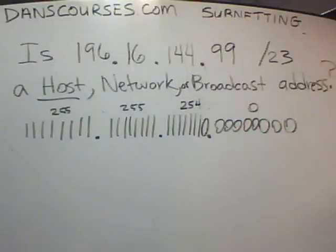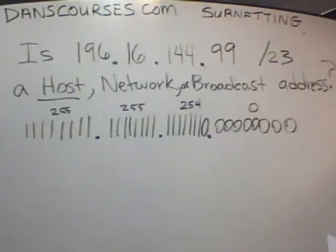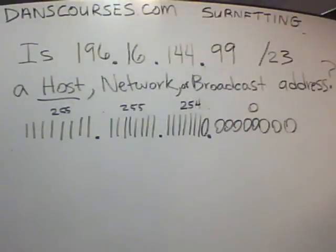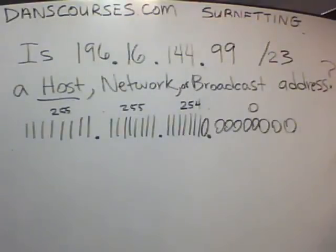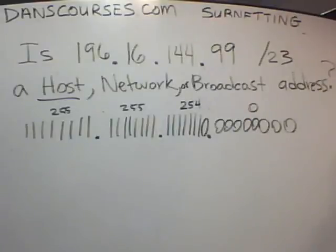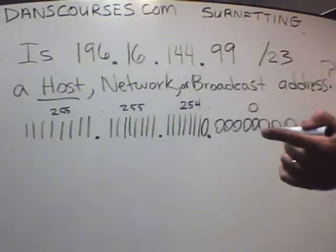So how do we find out whether this is a host, a network, or a broadcast address? The magic number will tell us all the information we need to know. What is the magic number? Andrew, what is the magic number? — 32. Nope. Matt, what's the magic number? — Two. The magic number is two.